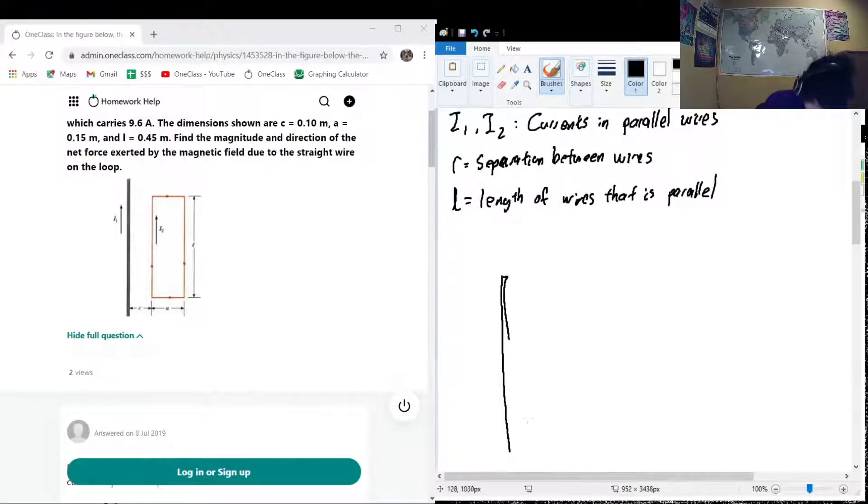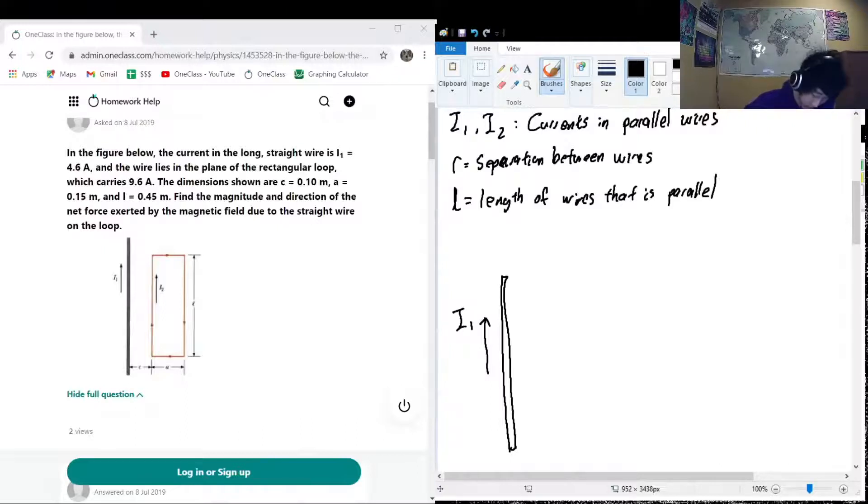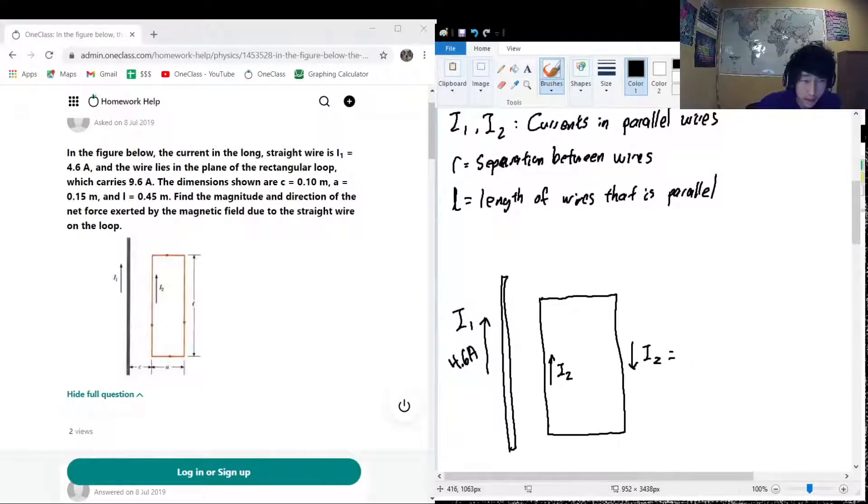So here we have our original wire, our main wire I guess. Here we have i1, and that is going to be how many amps? 4.6 amps. Here we have a loop where we're going to have i2 going up on that side and going down on this side, and this is going to be 9.6 amperes.